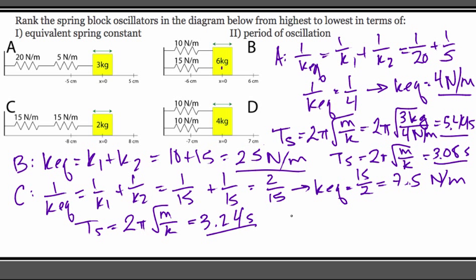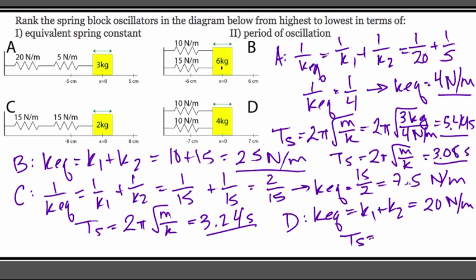Finally, for system D, the equivalent spring constant is k_eq equals k1 plus k2, or 20 newtons per meter. And the period is 2π times the square root of m over k, which gives 2.81 seconds.